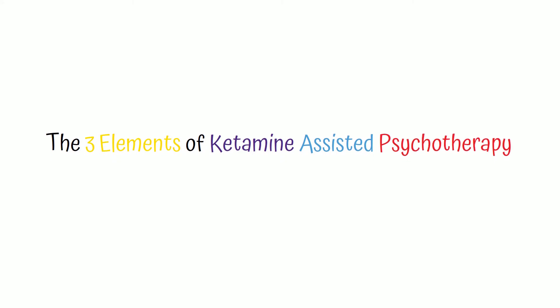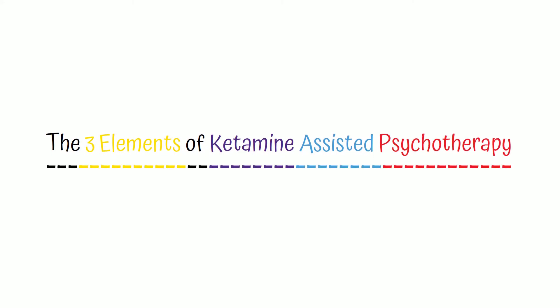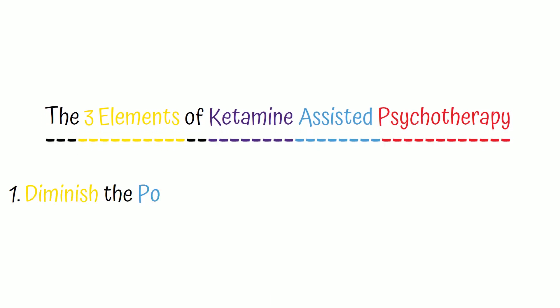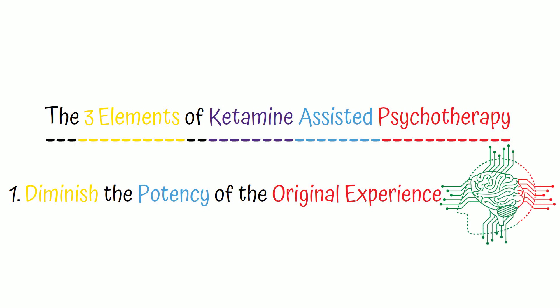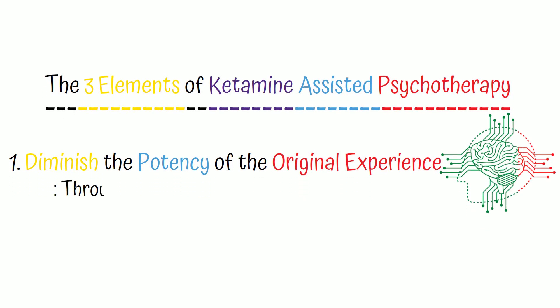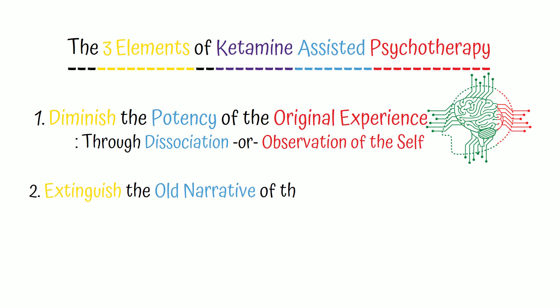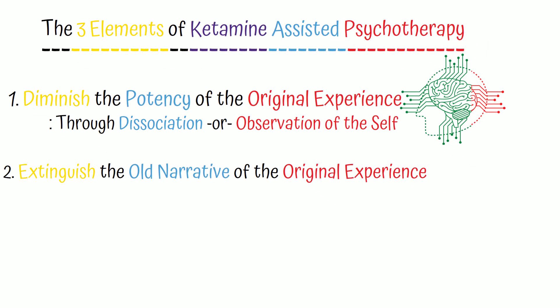for treating trauma as bringing together three elements. First, diminish the intensity and potency of the original trauma or fear experience. This is accomplished through dissociation and the anesthetic component—a reduction in pain, a dissociation, an observing of the self—leading to extinction of the trauma and fear.